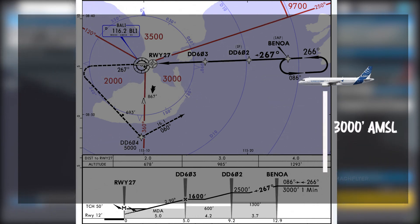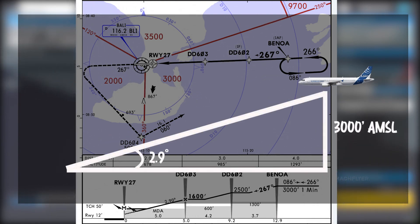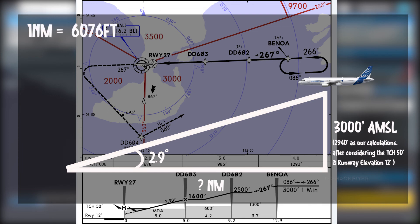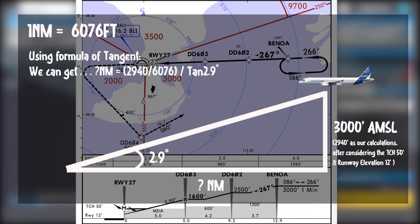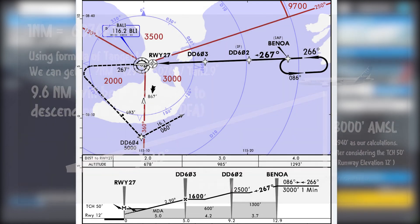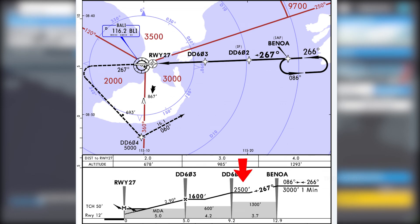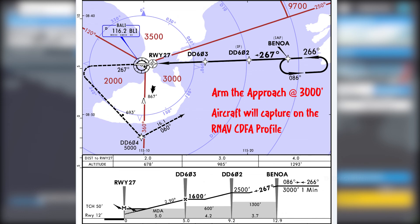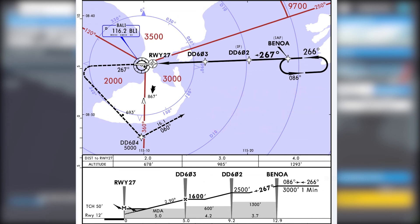For example, coming in at 3000 feet and based on a descent angle of 2.9 degrees — minus 60 feet to cater for the 50-foot threshold crossing height and 12-foot runway elevation — makes it 2940 feet to lose. The commencement distance would be somewhere around 9.6 nautical miles, which is 0.4 nautical miles before Delta Delta 602. At that point, you arm the approach and the aircraft captures the profile and descends at 2.9 degrees all the way to minima.